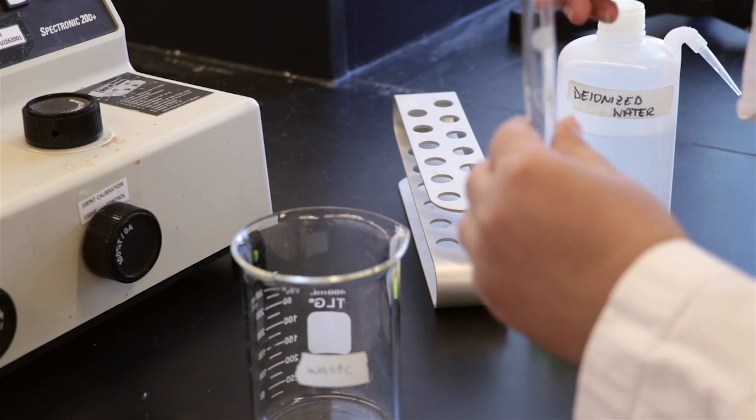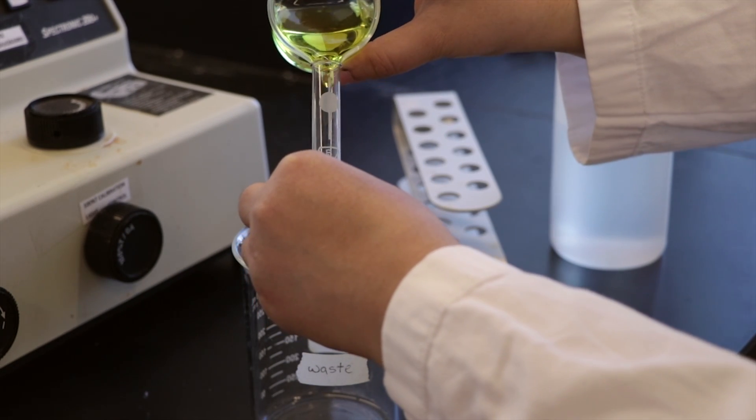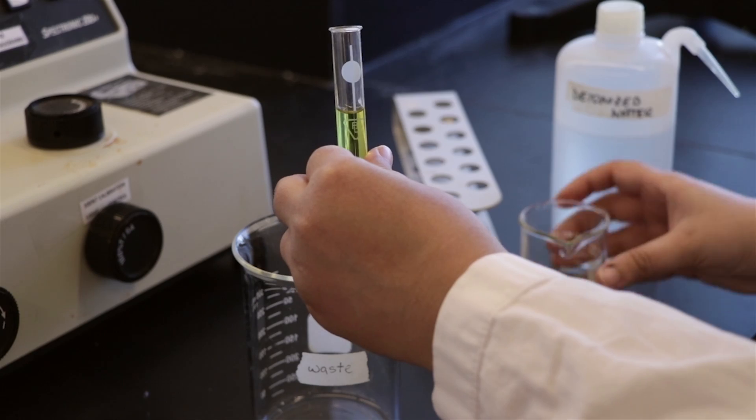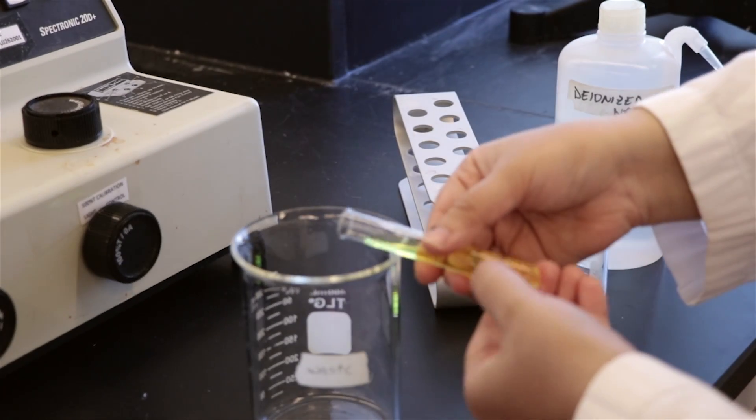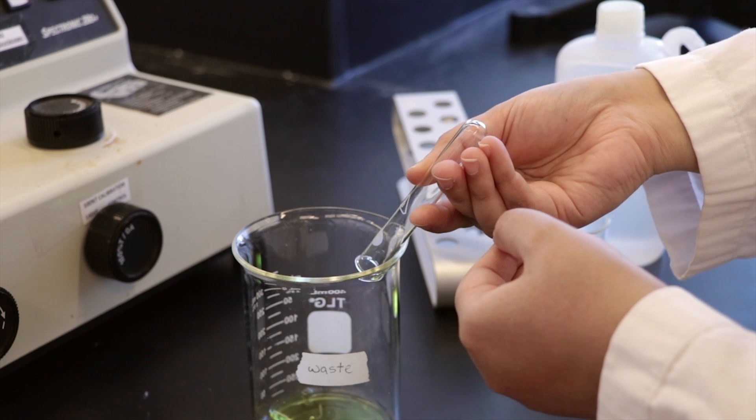You will use one cuvette for all readings to ensure consistency in path length. Rinse the cuvette three times with distilled water and three times with the next solution to be measured before each reading. Ensure that you're rinsing all sides of the cuvette as shown here.